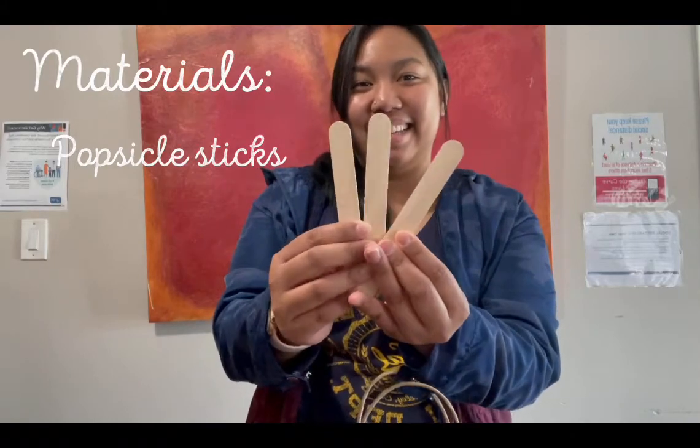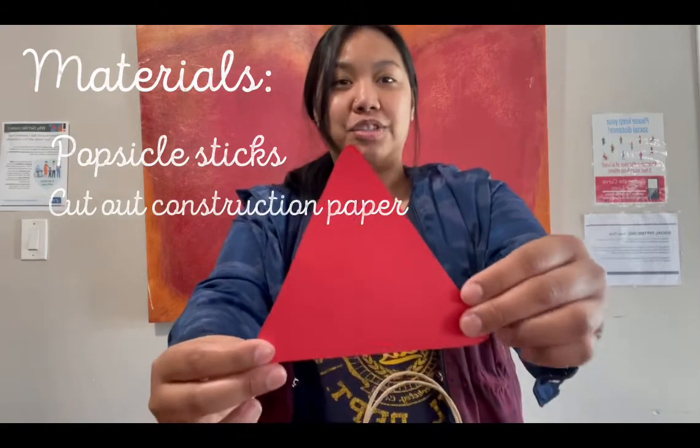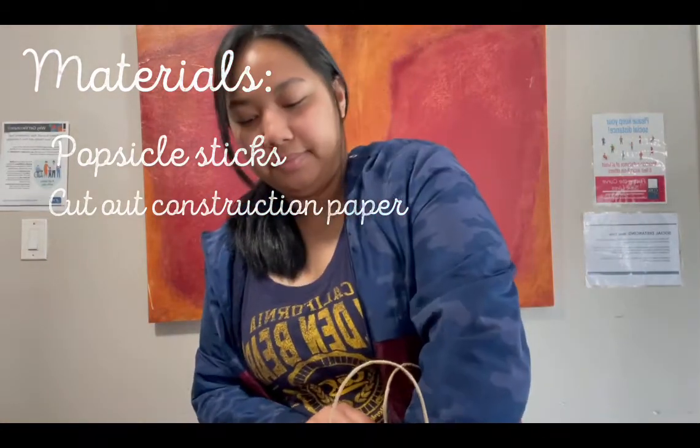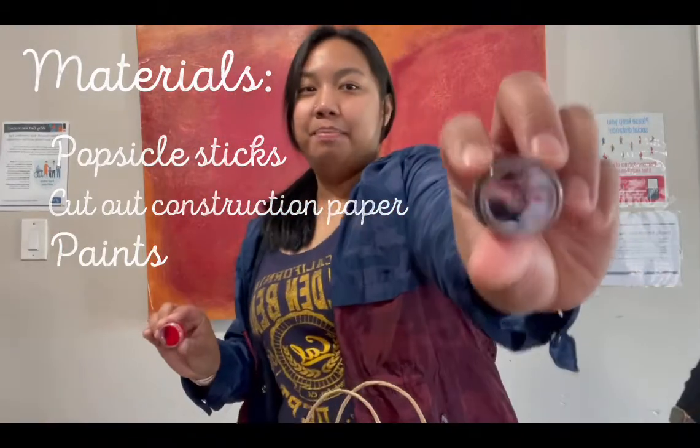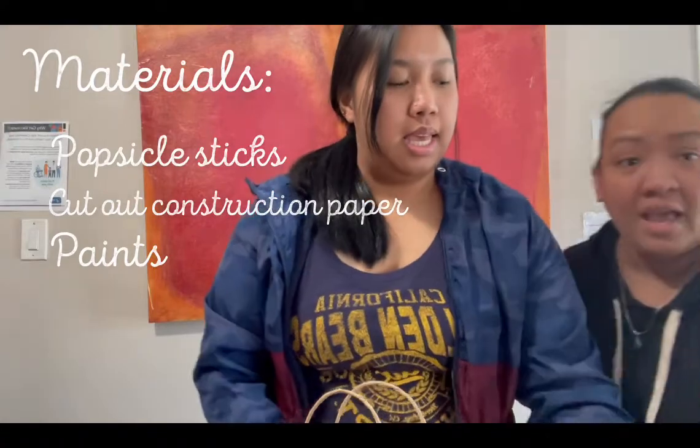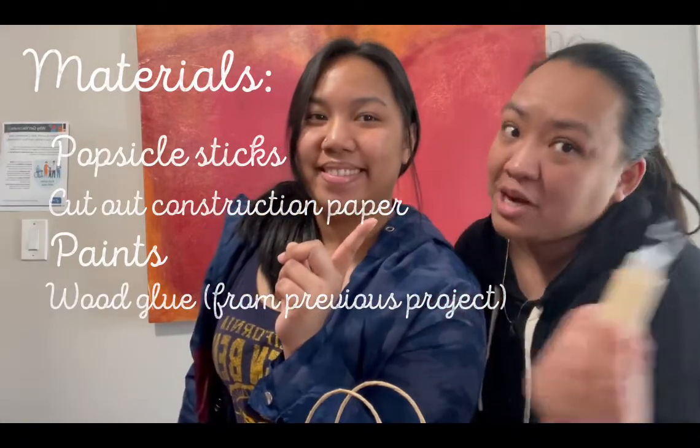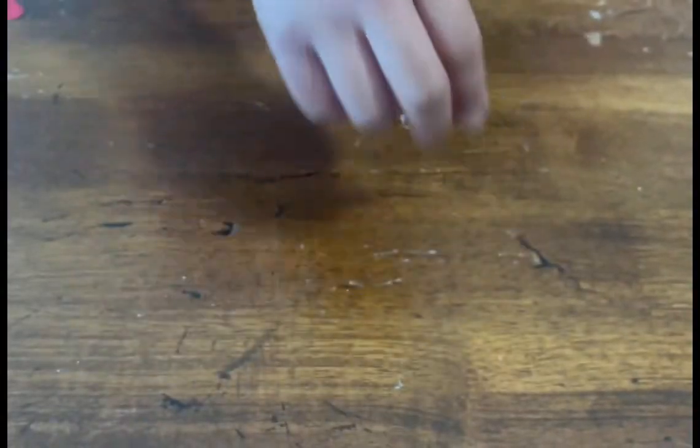In our paper bag you will find three popsicle sticks, pre-cut construction paper, red and black paint. And guys, we're going to be needing the wood glue from your previous projects. So let's start working.